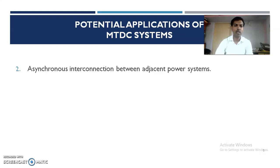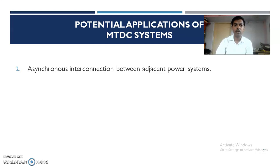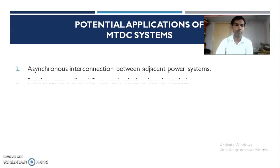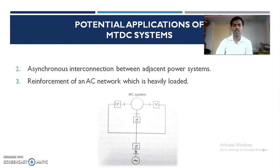The second application is asynchronous interconnection between adjacent power systems. In power system networks, several power systems need to be interconnected, but there is a frequency compatibility problem in AC systems. In HVDC systems there is no frequency constraint, so we can interconnect different power system networks easily. Asynchronous interconnection between adjacent power systems in MTDC systems is very flexible and economical.